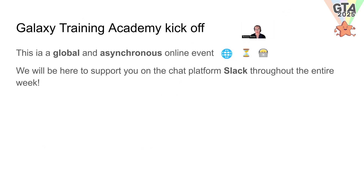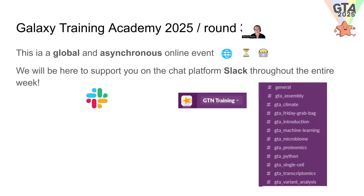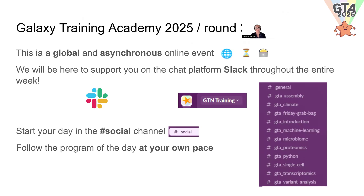We want to support you and we will support you via Slack. Slack is a chat platform where we have a GTN space. You would need to join this space, and within the space you find several channels that are labeled with GTA, or we have the general and social channels used for this event to help you. Whenever you have a question, you can jump to Slack and ask. We would also like to connect every day more socially, so please at the beginning of every day hop to the social channel and answer our icebreaker. We as instructors will also give you feedback on the icebreaker, and we hope to get to know each other a bit better.